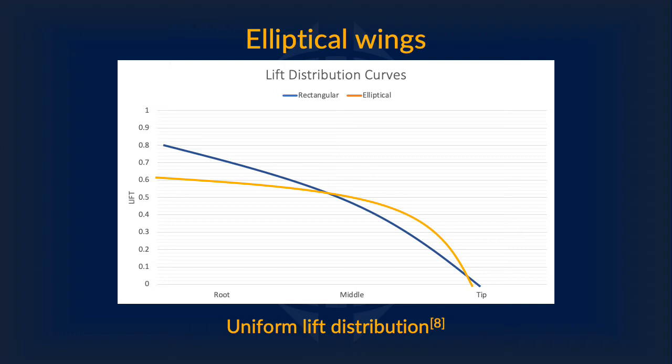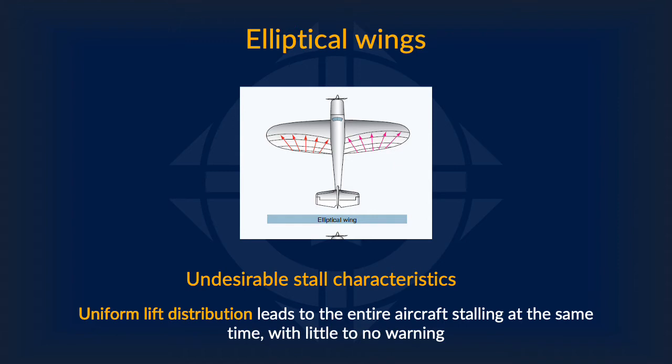Lift distribution simply refers to which parts of the wing produce the most lift. Here we have two different lift distribution curves on a simplified graph. The blue line is for rectangular wings, while the orange line is for elliptical wings. For a rectangular wing, the lift steadily decreases as you reach the tip, meaning most of the lift comes from the root of the wing — hence why it stalls first at the root. For an elliptical wing, however, lift is pretty uniform throughout the entire wing. As a result, unlike rectangular wings, elliptical wings stall at the same time with little to no warning.